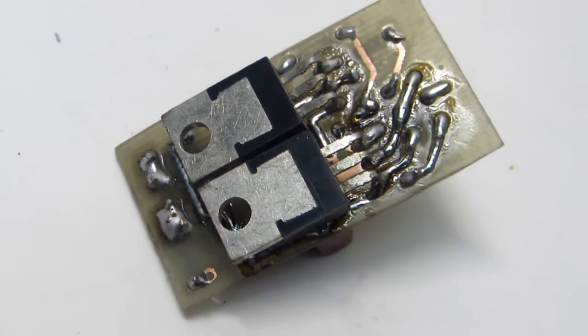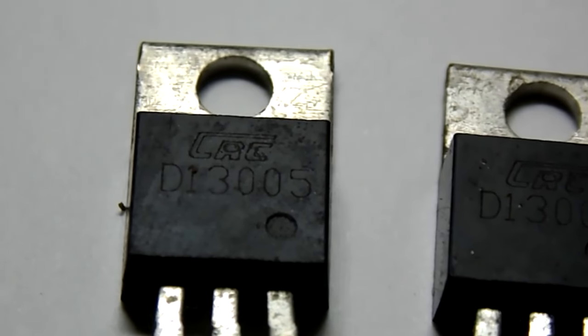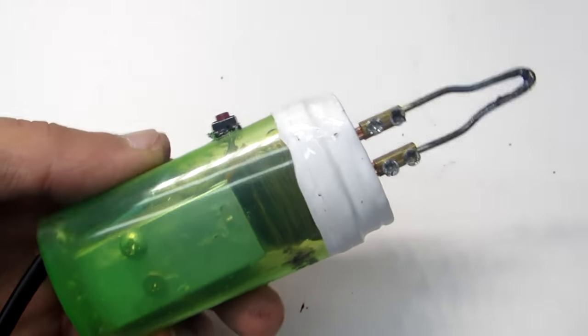Power transistors are soldered to the side of the conductors. You can use transistors 13003, 13005, or 13007. They can be removed from non-working motherboards.